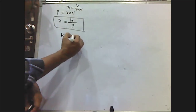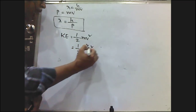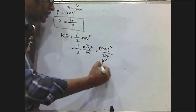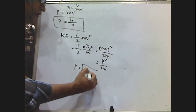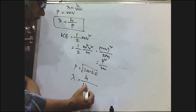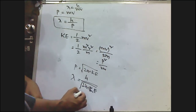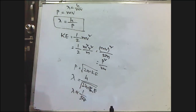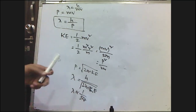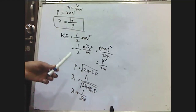We know that kinetic energy of a particle of mass m and velocity v is given by half mv². If we multiply and divide by m, we get mv² = p²/m, so p² = 2m × KE, and p = √(2m × KE). Substituting this into the De Broglie expression gives lambda = h by square root of 2m into kinetic energy. This is another expression for calculating the De Broglie wavelength.